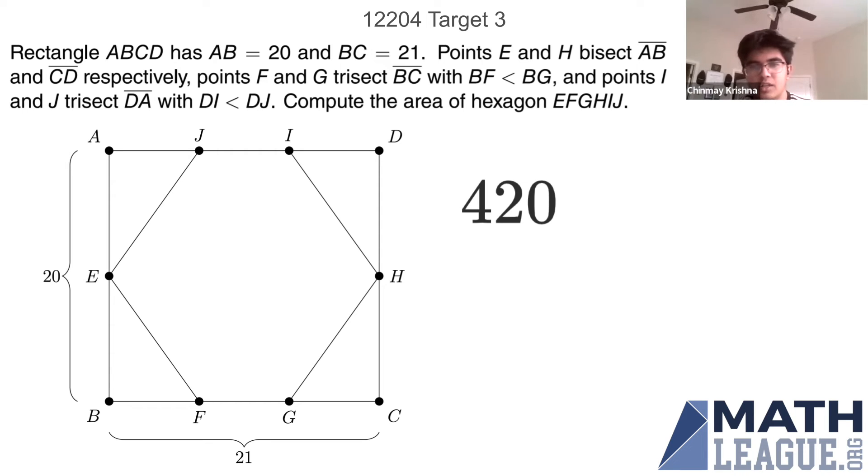And then we need to find the area of one of these right triangles. So the base here would be one third of 21, so that's 7, and this is half of 20 which is 10. So the area of one of these triangles is 10 times 7 divided by 2 which is 35.